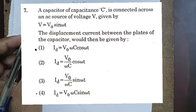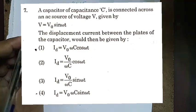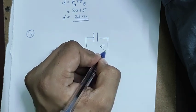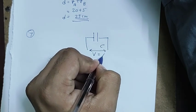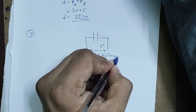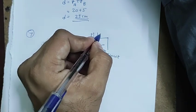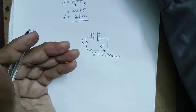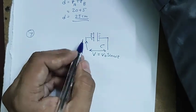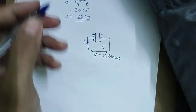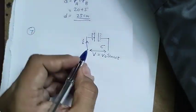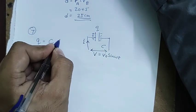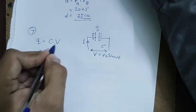Question 7 is about a capacitor being charged by an alternating voltage V = V₀ sin(ωt). The charge on the capacitor at any moment is Q = CV = CV₀ sin(ωt). Taking the derivative gives the conduction current dQ/dt = CV₀ω cos(ωt).